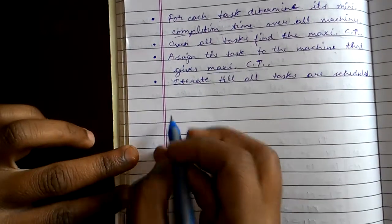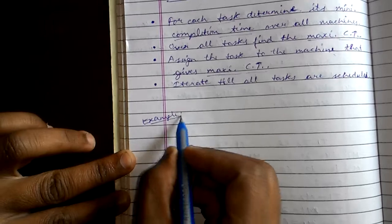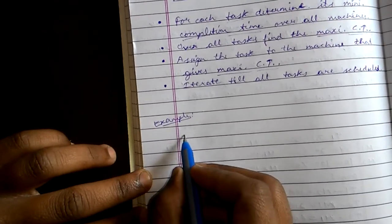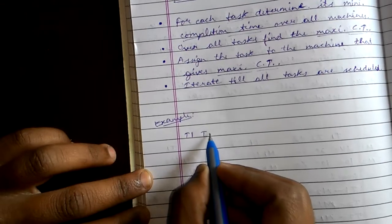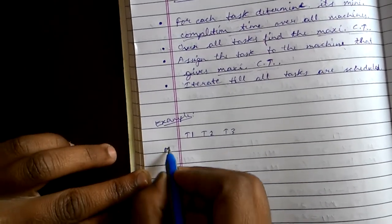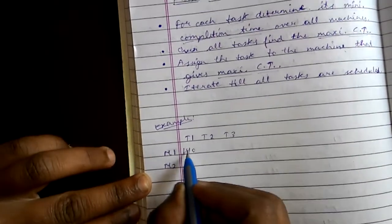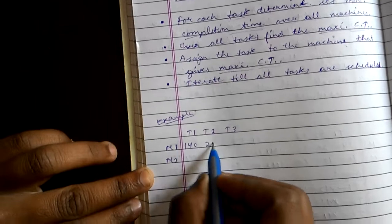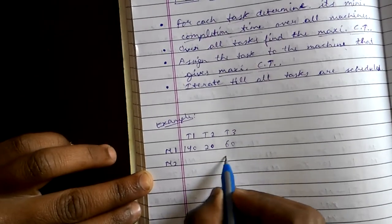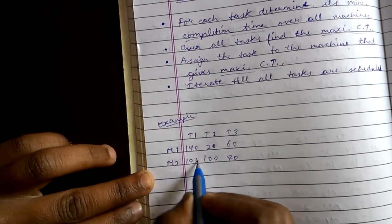Now what we need to do, let us discuss this with an example. We are given 3 tasks: t1, t2, t3 and we are given 2 machines m1 and m2. The completion times are 140, 20 and 60 for one set, and 70, 100 and 100 for another. Now we need to schedule these tasks.